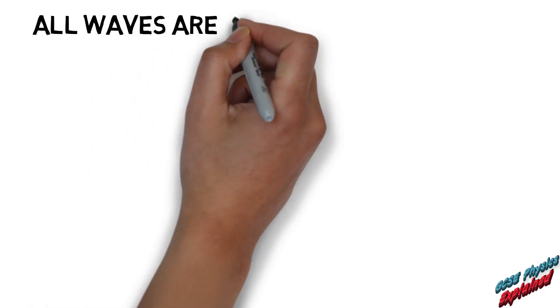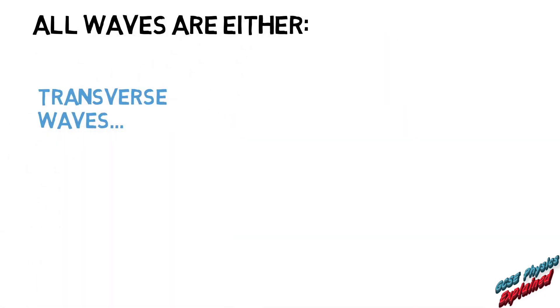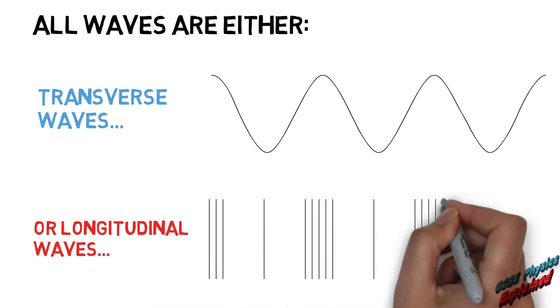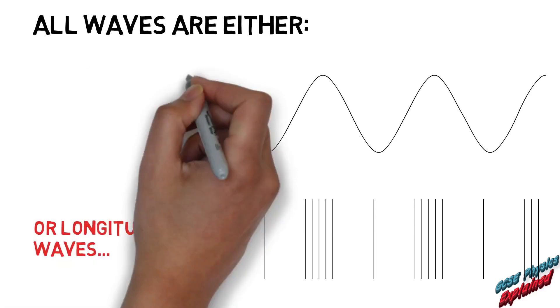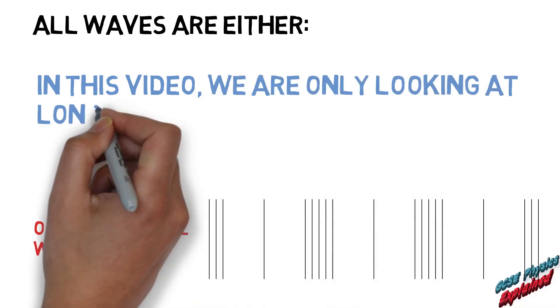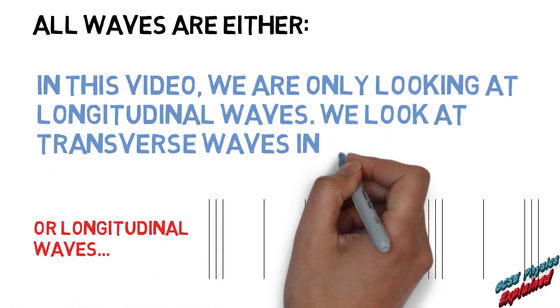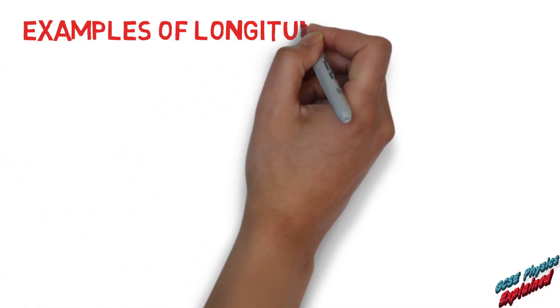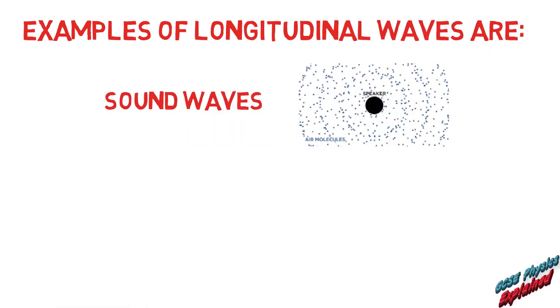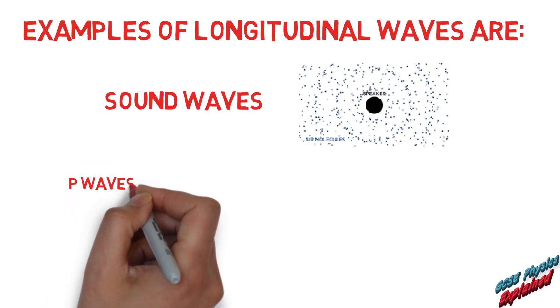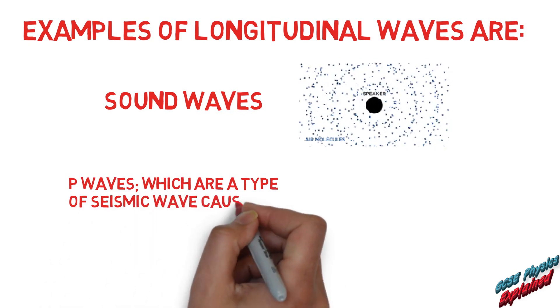All waves are either transverse waves or longitudinal waves. In this video we are only looking at longitudinal waves. We look at transverse waves in another video. See the link above. Examples of longitudinal waves are sound waves. P waves which are a type of seismic wave caused by earthquakes.